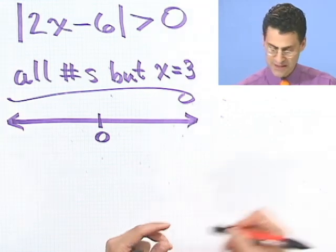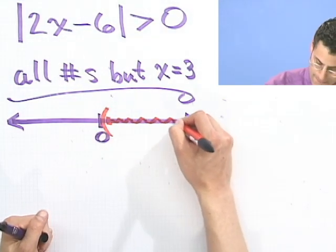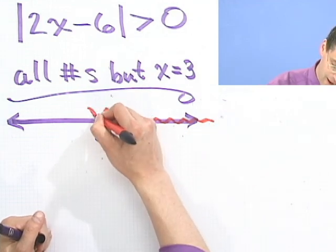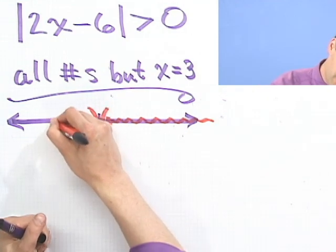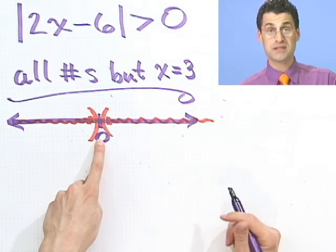Here's 0. It would have to live way out here or way out here. Do you see? It's exactly what we said before. It would be every single possible number except 0.